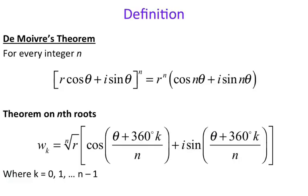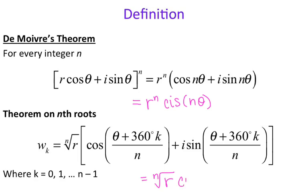De Moivre's Theorem allows us to take complex numbers and raise them to a particular power. For example, if I wanted to take the complex number 1 plus 2i and raise it to the 10th power, I can use De Moivre's Theorem. Your complex number has to be in trig form first — that's the r cosine theta plus i sine theta. I like to write these formulas in shorthand using cis — cosine plus i sine — of n times theta. Same thing for the Theorem on nth roots.